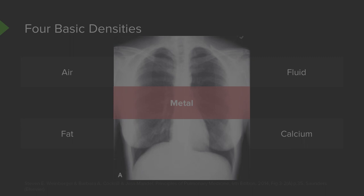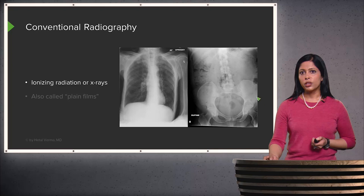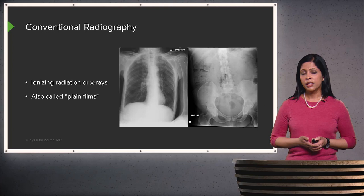Conventional radiography is also called an x-ray, and it's produced by ionizing radiation. You see two examples here of a normal chest x-ray and a normal abdominal radiograph. These are also called plane films. There are multiple terms that really signify the same thing — a radiograph, a plane film, or an x-ray are really all the same thing.